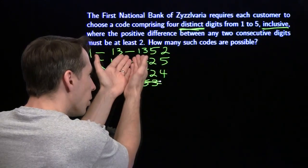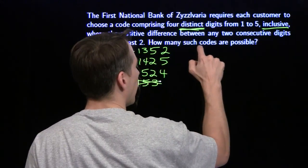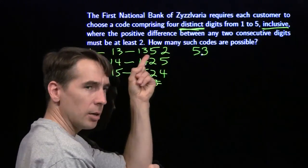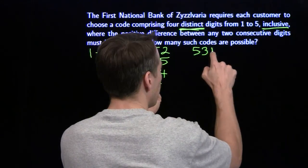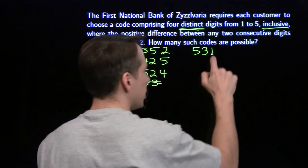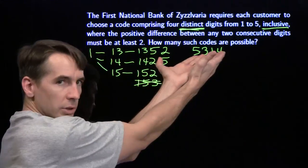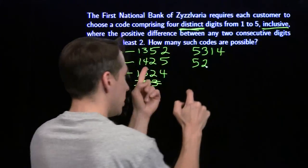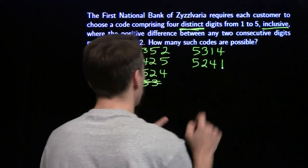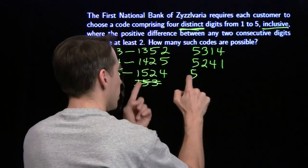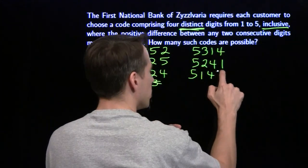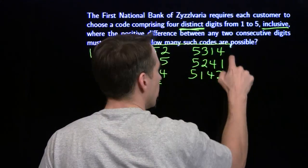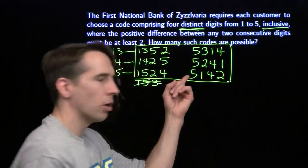So instead of starting from the lowest number, we start from the highest: five. Replace the one with the five, the four with the two, the two with the four, and the five with the one. Applying this symmetry to each code starting with one gives us all the codes starting with five. And we've used symmetry to knock off the case of starting with five.